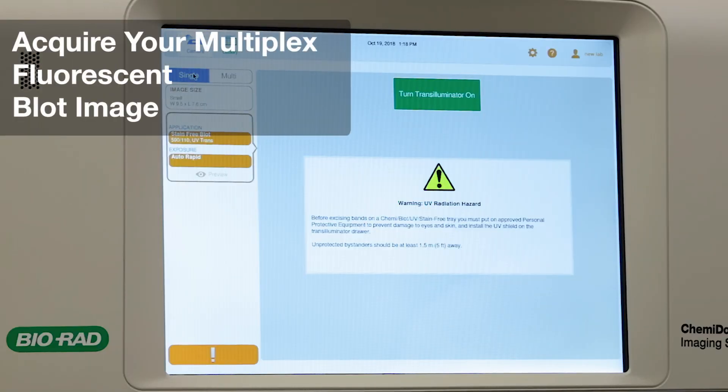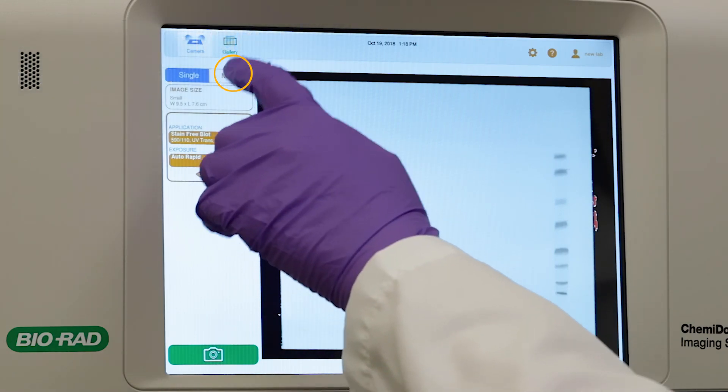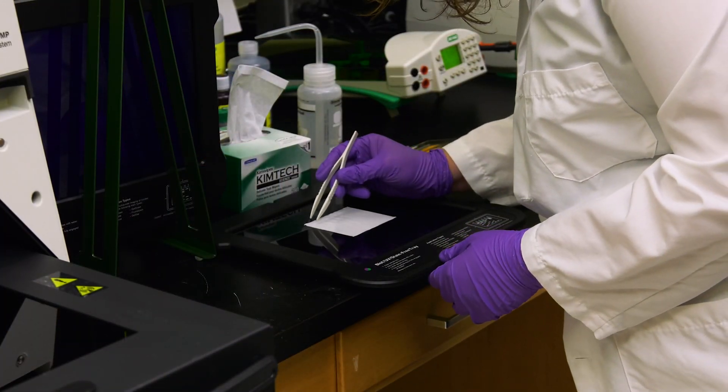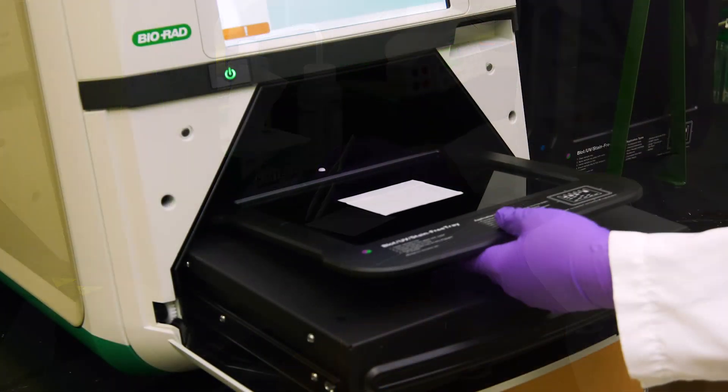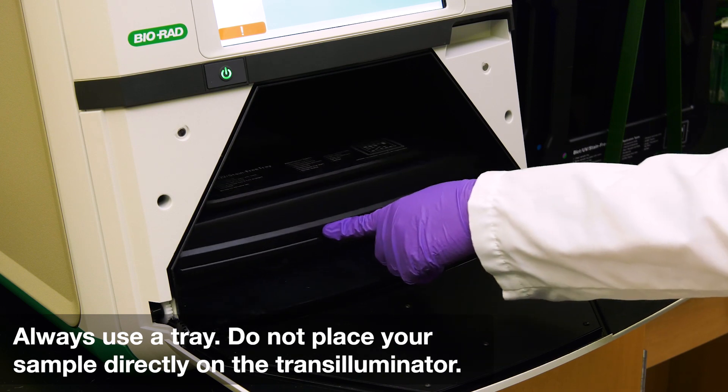To acquire multi-channel images, begin by tapping Multi. Center your membrane on the UV tray. Once you are satisfied with the position, push the transilluminator back in and close the drawer.